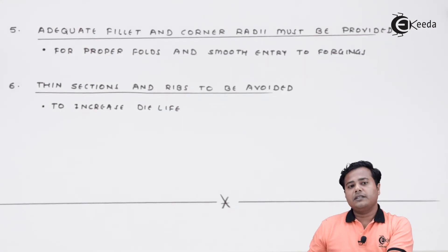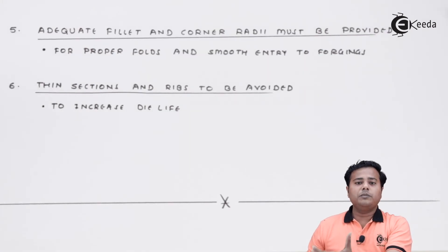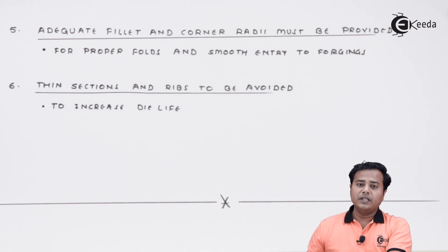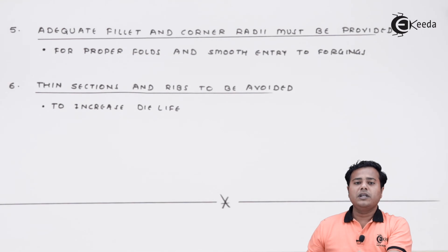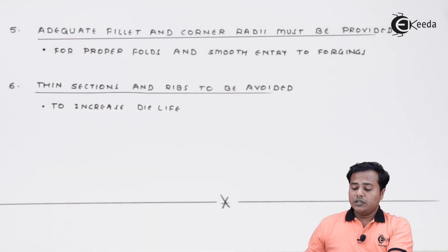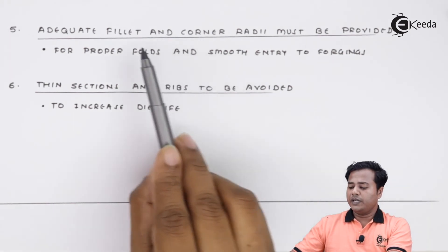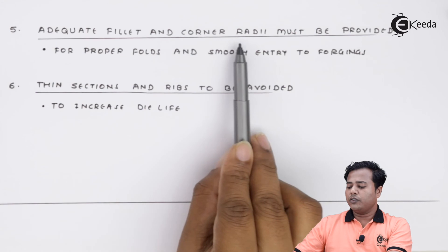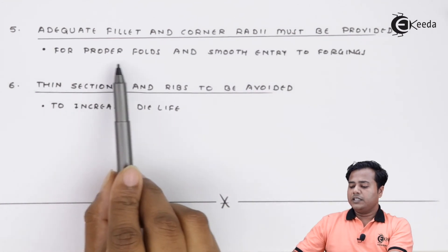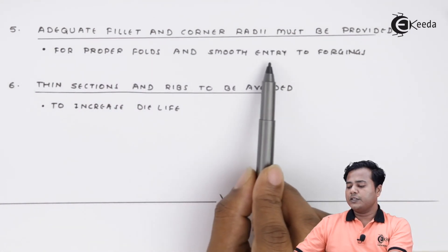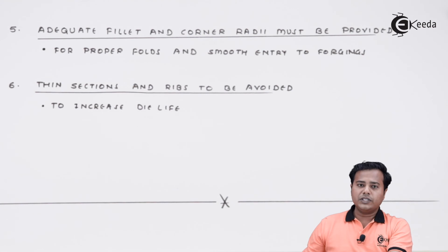The next is provision of adequate fillets and radii. We know that at shaft corners there is a highly possible nature of stress concentration. So, like casting procedures, in forgings also we should provide fillets and corner radii. This is for proper folds and smooth entry to forgings.